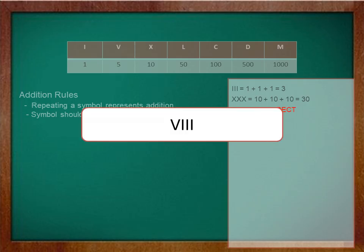For example, here we have V, I, I, I. Now V which represents 5 is greater than I which represents 1. So write 5 and then add 1 to it. And since I is getting repeated three times, you would add 1 three times and the answer is 8.